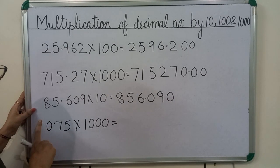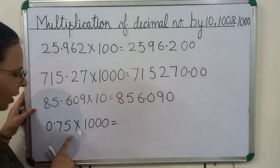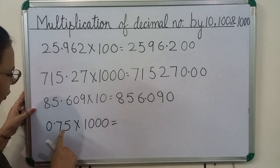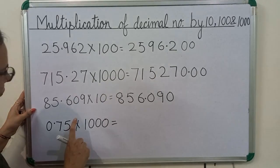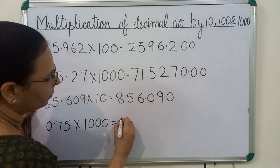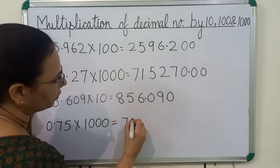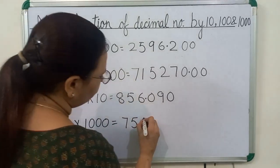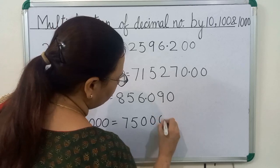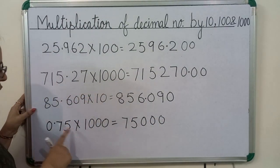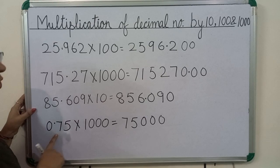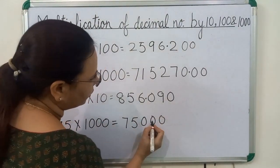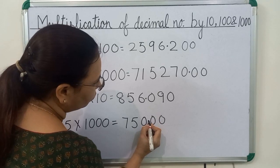Now we will see the last example. We will multiply 0.75 by 1000. First we will multiply 75 by 1, and we will get 75. 1000 has 3 zeros, so we write here 3 zeros. In the question the decimal point is before 2 digits, so here also we will put the decimal point before 2 digits.